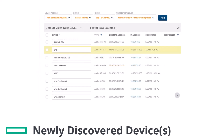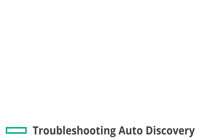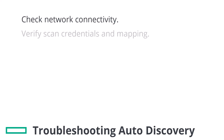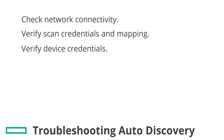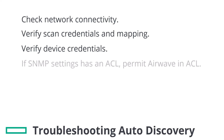For a full list of the newly discovered devices, go to the Devices New page. In case auto-discovery is not working, check network connectivity, verify the scan credentials are mapped to the correct network to be scanned, and make sure device credentials are set up correctly. If the SNMP settings on the network device have an ACL, then allow Airwave in the ACL rule.